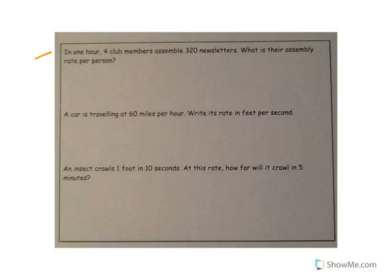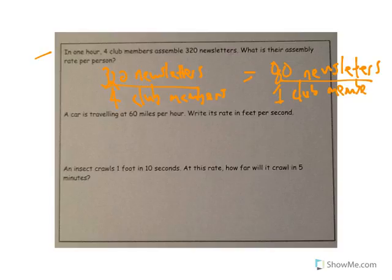So if we look here, in one hour, four club members assemble 320 newsletters. What is their assembly rate per person? So it's going to be 320. You do need to list the units. Newsletters per four, I'm just going to say club members. So when I divide the top and bottom by four, I'm going to end up with 80 newsletters divided by one club member. And you really, again, need to list the unit to make sure that's clear.